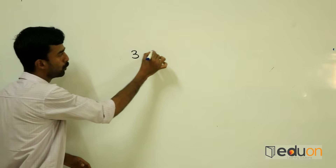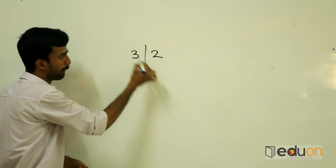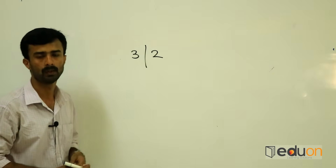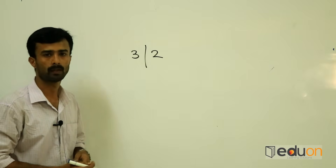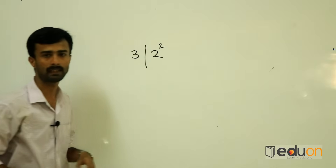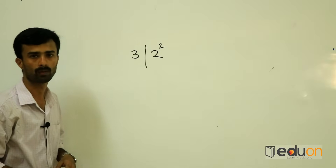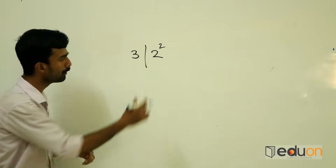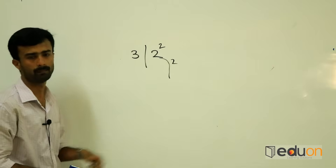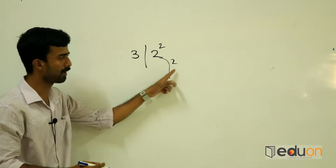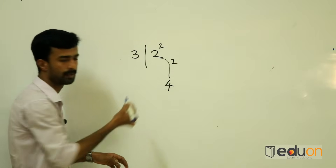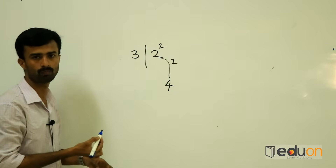32 is the number. How can we calculate 32 squared? Easy to calculate. First, take the last number — 2 squared. 2 squared is 4.